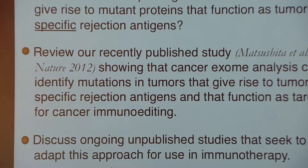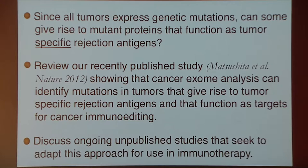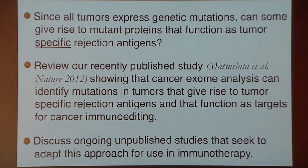A few years ago, we decided to try to define what the targets of the editing process were. Specifically, we wanted to ask the question whether tumor-specific antigens could, in fact, be major targets of the cancer immunoediting process — and if so, what was the mechanism that led to the editing? This work was largely based on a prediction made years ago by Jim Allison and Bert Vogelstein that since all tumors express genetic mutations, some of these could give rise to mutant proteins that could function as tumor-specific antigens such that the immune system would see them as foreign proteins and react against them.